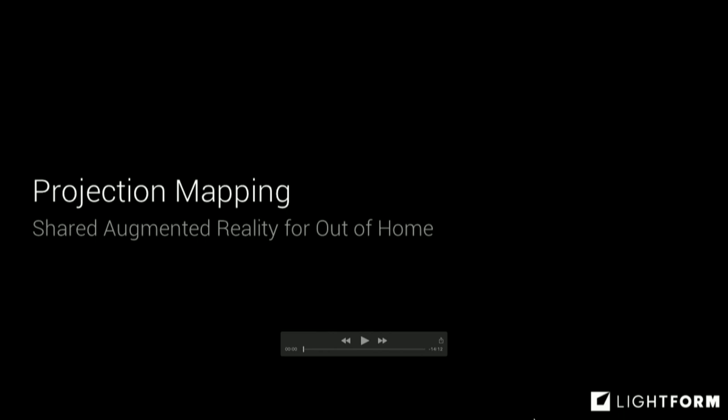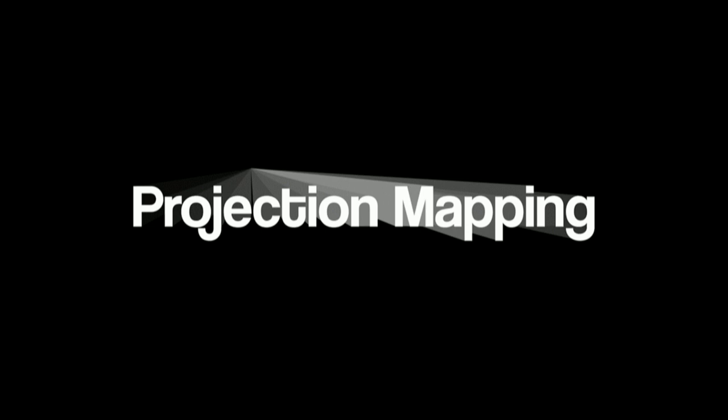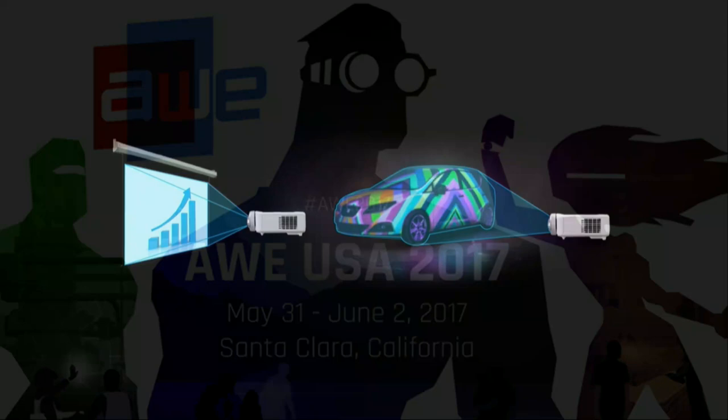Projection mapping used to be called spatial augmented reality. It's a technology where we take everyday projectors — just like the projector that's displaying this video — and instead of pointing it at a flat screen, you point it at something that's not flat. That's a 3D object.